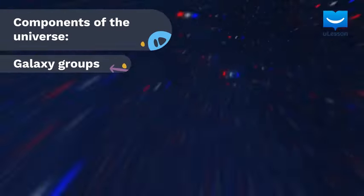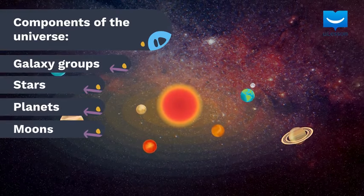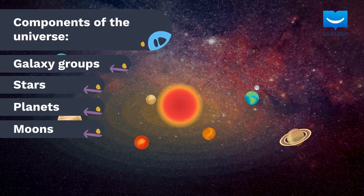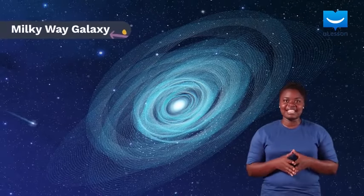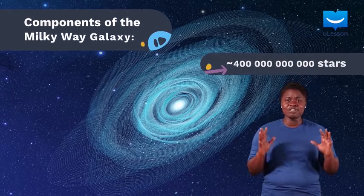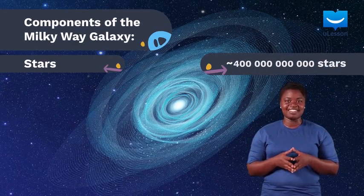And within these galaxies are stars, several planets, and moons. One particular galaxy that is very important to us is the Milky Way galaxy, which contains nearly 400 billion stars. These stars include our star, the sun.